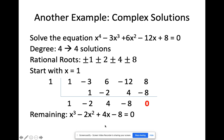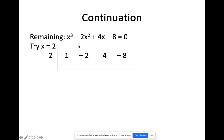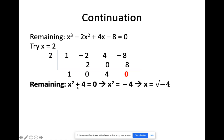Now I'll try x = 2 on the cubic x³ − 2x² + 4x − 8, with coefficients 1, negative 2, 4, negative 8. 1 times 2 is 2. Adding gives 0. 0 times 2 is 0. Add to 4 gives 4. 4 times 2 is 8, and this becomes 0. So x = 2 is the second answer. The remaining quotient is x² + 0x + 4, which simplifies to x² + 4 = 0.